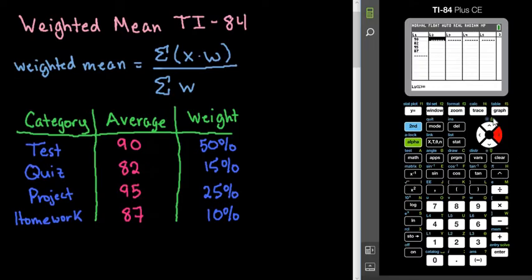Sorry, I have to enter first. Go to the next list and put in the weights. Like I said, you can either put in 50 or 0.5. You can either put in 15 or 0.15. Just be consistent with how you do it. So if you put in 25 for the first one, you don't want to put 0.1 for 10%. So I would put those in.